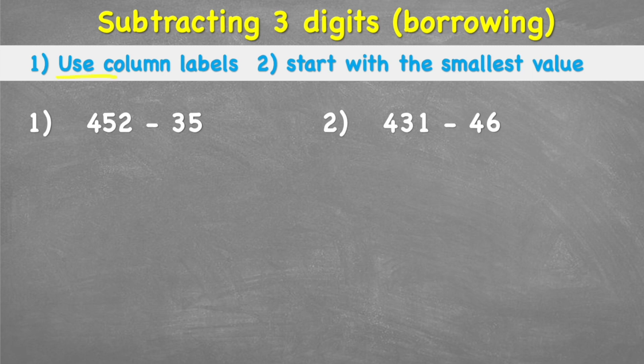We're going to use these two tips to start with. We're going to use column labels and we're going to start with the smallest value. But we need to be very careful when we fill in our numbers because subtraction can get very tricky.